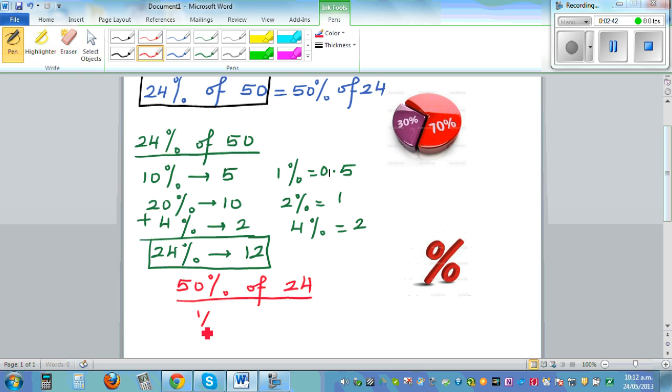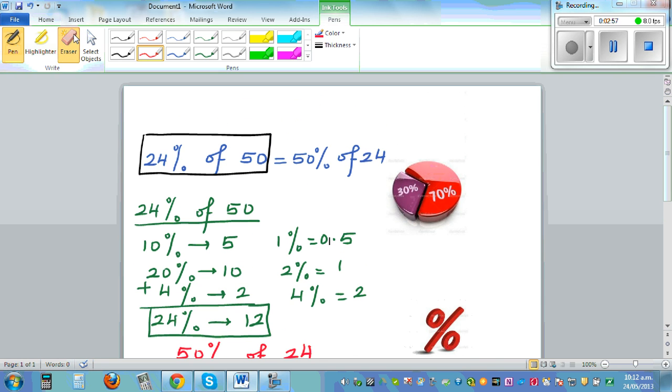What she found was 50% of 24. Well, 50% of 24 is very easy, that's half of 24. 50% is 50 out of 100, that's 1 out of 2, so half of 24 is also 12.